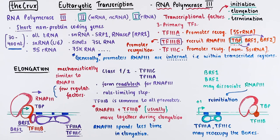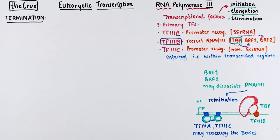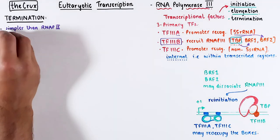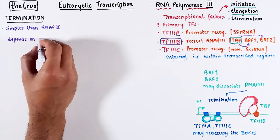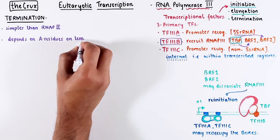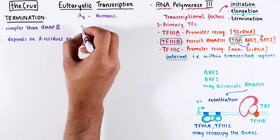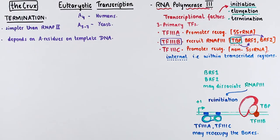Now let's move on to termination. Unlike polymerase 2 transcription, termination in POL3 transcription is quite straightforward. It primarily hinges on a short stretch of adenines on the template DNA. In humans, you need only 4 consecutive adenines, while yeast may require a slightly longer stretch.